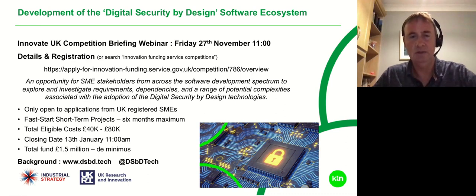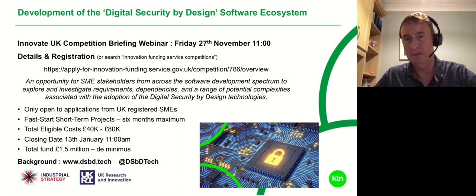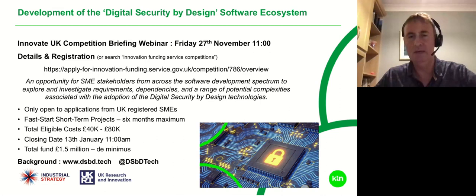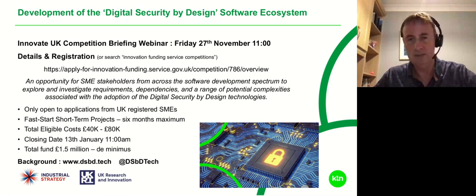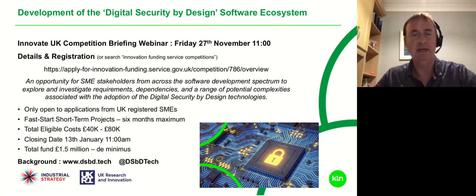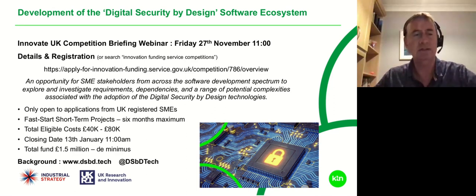As you can see on the screen, there's a competition coming soon with a number of challenges that will need to be overcome. Innovate UK would like companies to investigate these challenges about adopting the technology across the software development spectrum, looking at the requirements, dependencies, and complexities. The details are on the link on the screen — search for innovation funding competitions and you should find it. Please register for the webinar if you're interested; it's on Friday the 27th of November. If you go to the dates tab of the competition details, you'll find a link there to register.